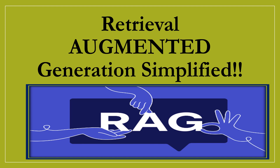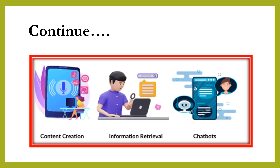To make the card more special, you decide to use retrieval augmented generation. You will start by using retrieval to find information about your friend that will help you write a heartfelt message.